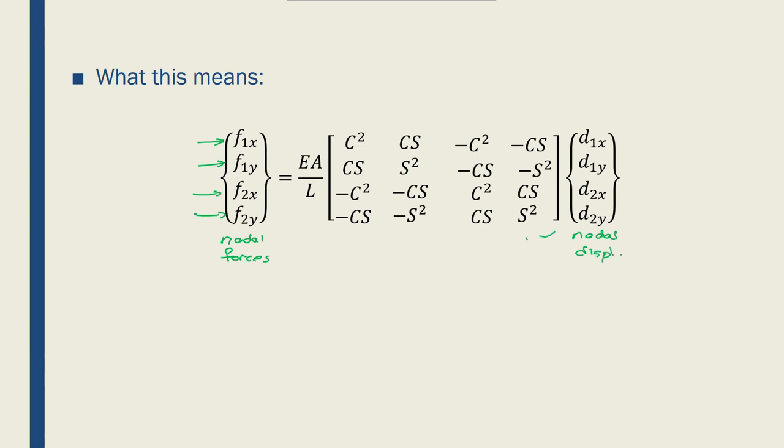And I have nodal displacements in the global coordinate system. And I can find the relationship between the two vectors using this global stiffness matrix. And again, this is only for a single truss element. So basically, what we did here is that we found the relationship between the nodal forces and the nodal displacements of a truss element in global coordinate system.